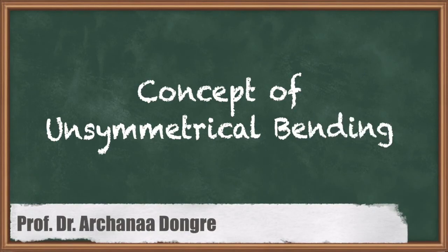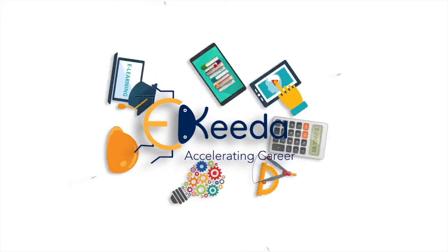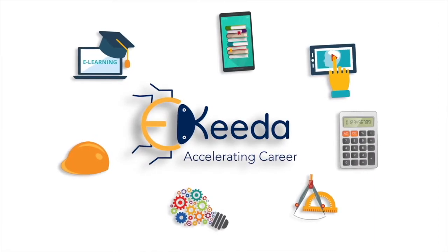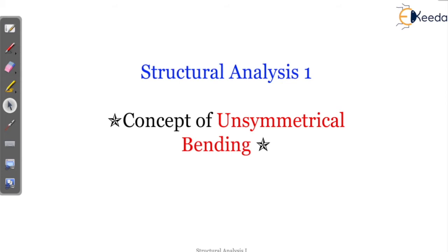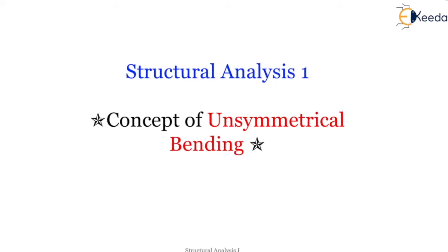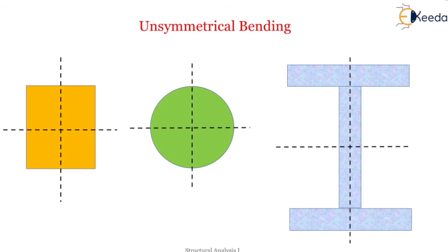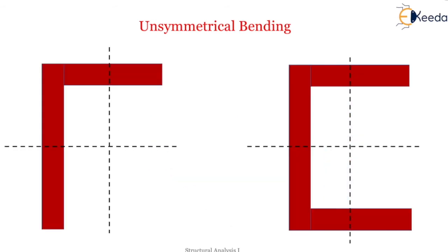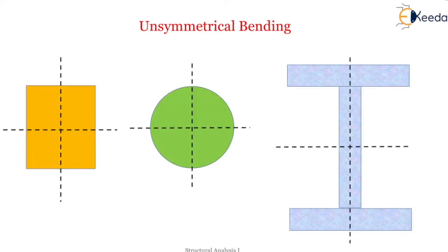Hello students. Here we are going to learn the concept of unsymmetrical bending. In the last class we covered the definition of symmetrical and unsymmetrical bending. Every section can experience unsymmetrical bending depending on the load acting on it. If the load acts along the principal axis, it creates symmetrical bending, but if it acts at some angle, that creates unsymmetrical bending.